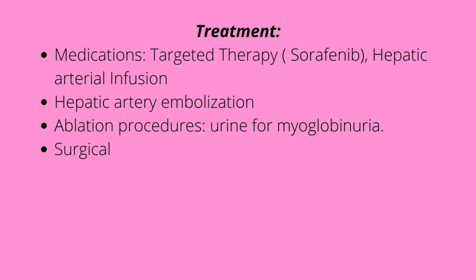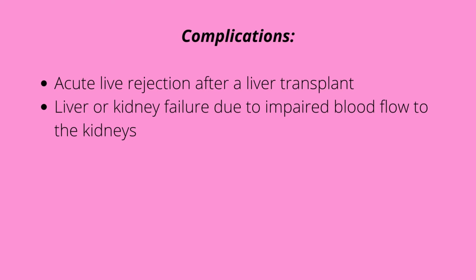We can also do surgical procedures as treatment. Some complications that could arise include acute liver rejection after a liver transplant, because patients could end up getting a liver transplant, and there is criteria the patient has to meet to receive one. Acute liver rejection has to be resolved as fast as possible to prevent the demise of the patient. There can also be liver or kidney failure due to impaired blood flow to the kidneys. That's it for our GI cancers.